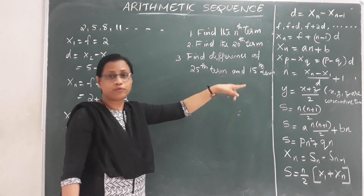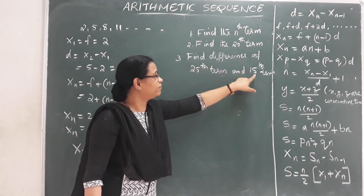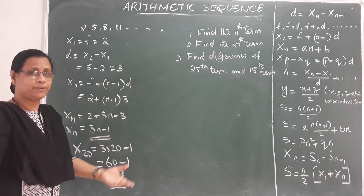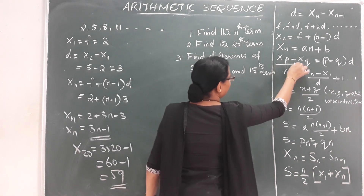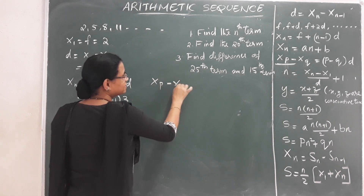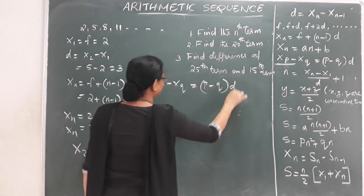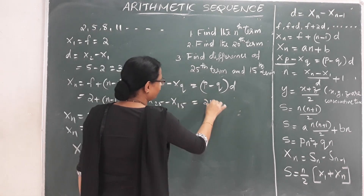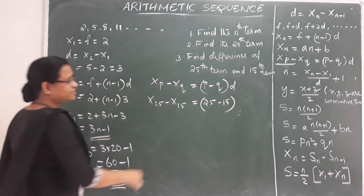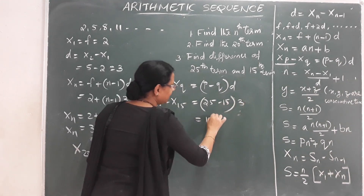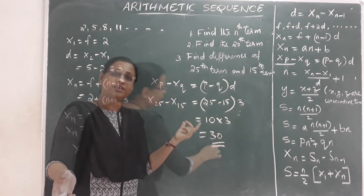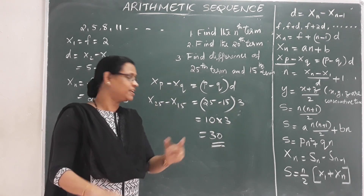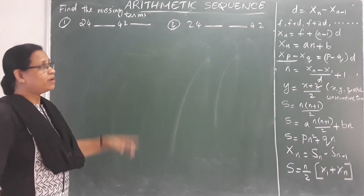Next question: find the difference between the 25th term and the 15th term. We can do this directly using the formula: xp minus xq equals (p minus q) into d. Here p is 25, q is 15. So x25 minus x15 equals (25 minus 15) into 3, that is 10 into 3, equals 30.